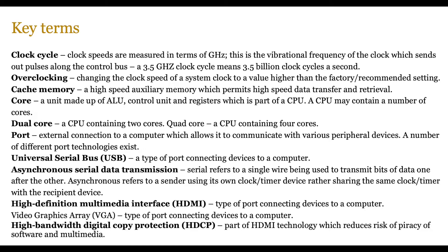We're going to be looking at overclocking — changing the clock speed of a system to a value higher than the recommended. We'll be discussing cache memory, what makes a CPU core, what is meant by dual core, quad core, and eventually octa core. We'll also look at various ports like USB, asynchronous serial data transmission using a single wire to transmit bits of data asynchronously, and then moving on to HDMI and high bandwidth digital copy protection, which is a part of HDMI.